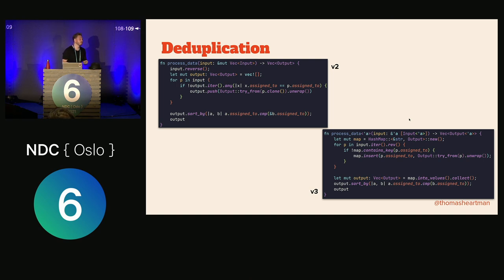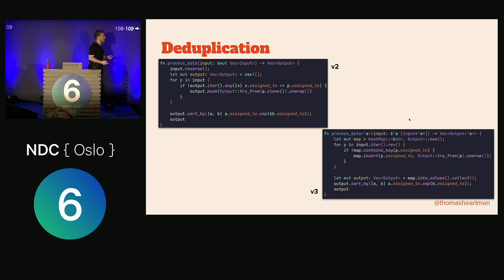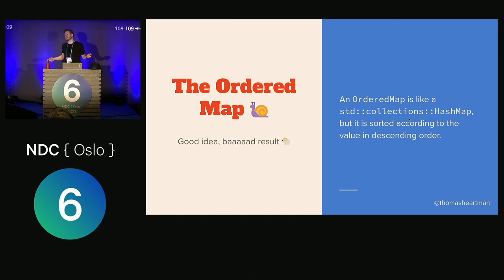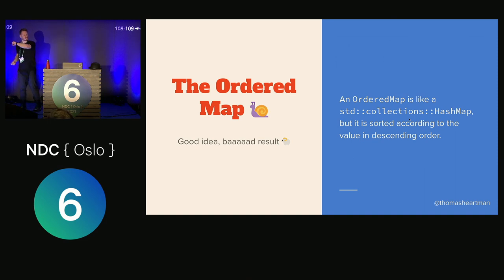Doing it this way, you end up putting things into a map, then back into a list, then sorting the list. That sounds like a lot of work. I also thought — how about we use an ordered map? It's like a hash map but sorted by descending value. I thought, 'That's really clever, Thomas, you've cracked the case.' But turns out it wasn't very good at all, because the time you spend on insertion is too much — it takes too long to sort things as they go in. I tried many iterations of this, but it doesn't work.